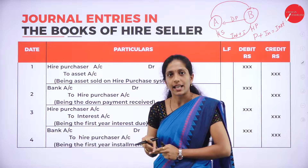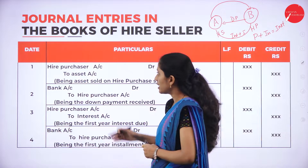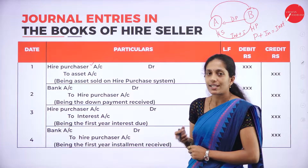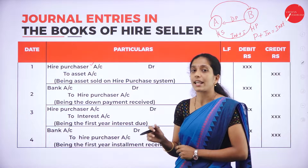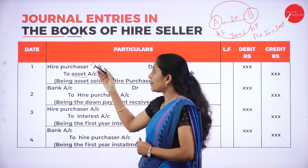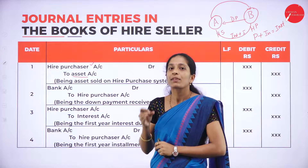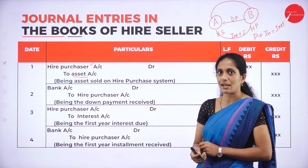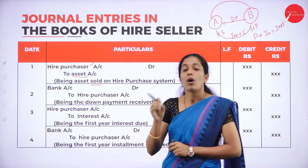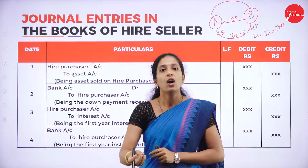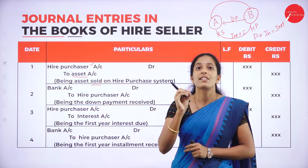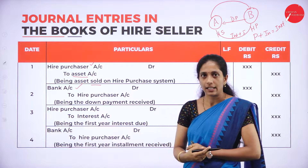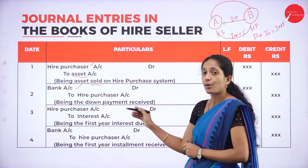Now, think of yourself as a hire seller. You are going to sell goods to a hire purchaser. The first entry is for selling the goods: Higher Purchaser Account debit to Asset Account. The asset goes out of the business, and the hire purchaser is the receiver. The second entry is for receiving the down payment: Bank Account debit to Higher Purchaser Account — being the down payment received.